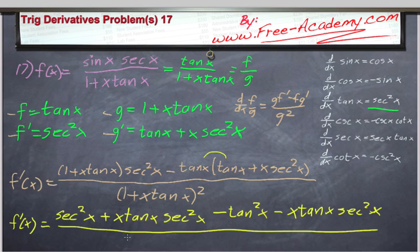And this is divided by 1 plus x tan x squared. We have a positive x tan x secant squared minus x tan x secant squared, so those cancelled.